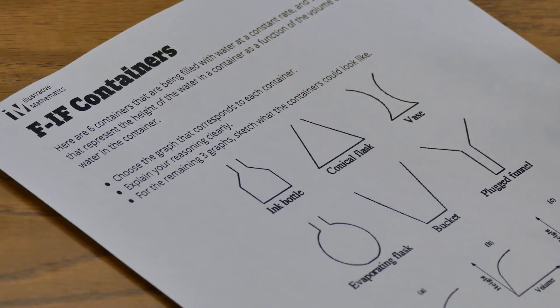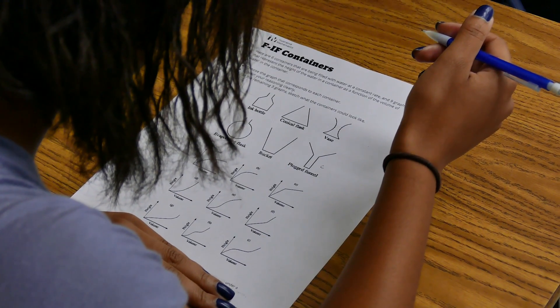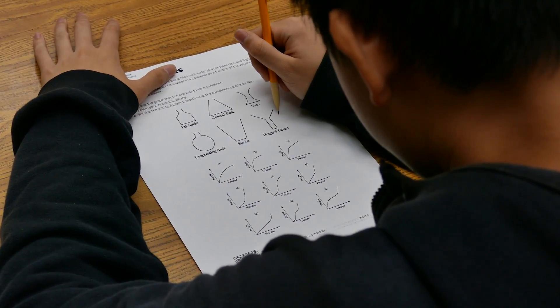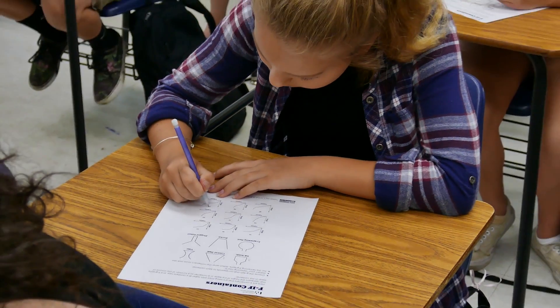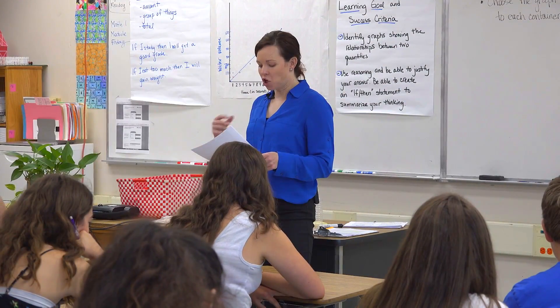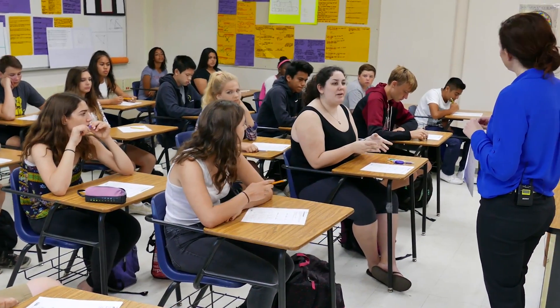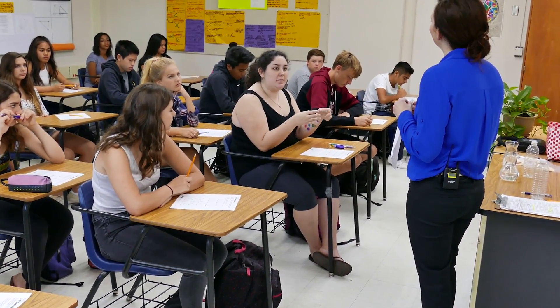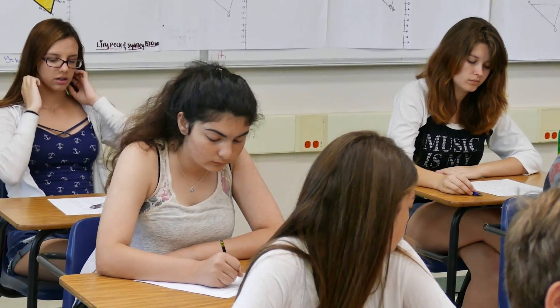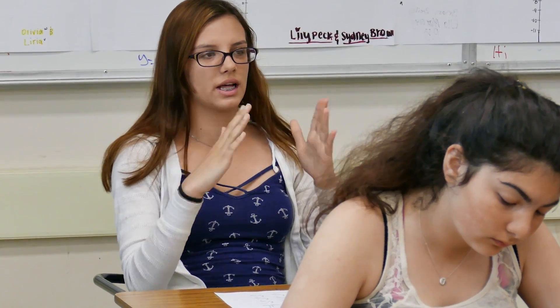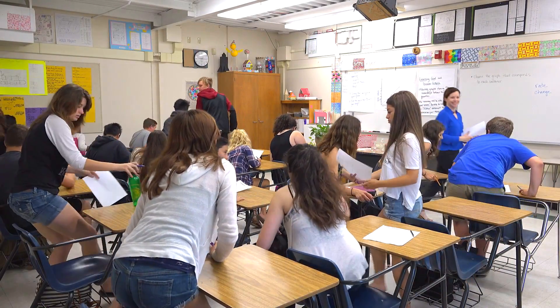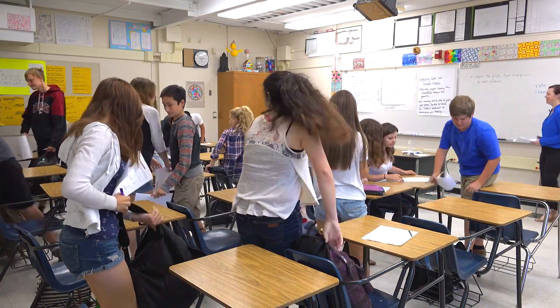Students were given a task with six different shaped containers and a few minutes to work on it individually to get their thinking going. When I checked in, one student said she thought about pouring water at a steady rate, thinking about whether it would go slower or faster if the vase was narrower or wider. Another looked at the shape of the bottles and tried to decide which graph would best show the rate of water going into that shape of vase.